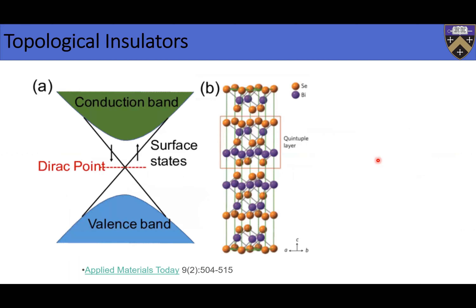Most of the audience has probably worked with topological insulators. This is a really cool material — the dispersion relationship gets a linear relationship, you have a Dirac point, and topological states coupled with spin and momentum. We use these to probe a lot of interesting fundamental physics and also to build devices.